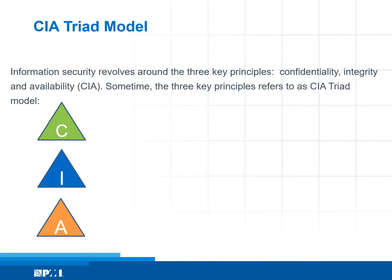CIA triad model. Information security revolves around three key principles: confidentiality, integrity, and availability — sometimes referred to as the CIA triad model.